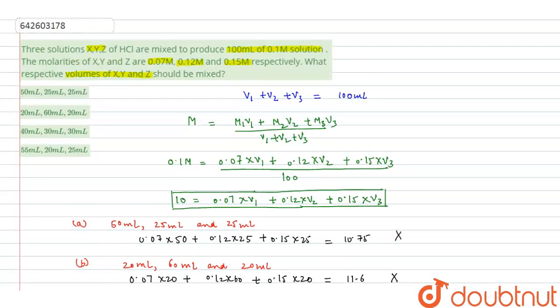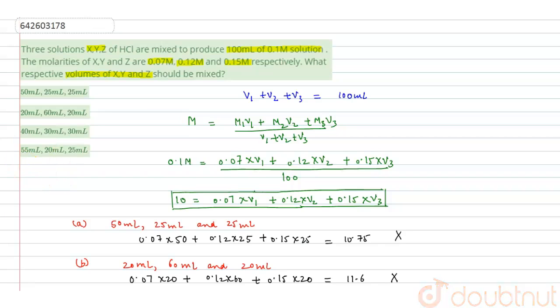These are the different volumes in which the solutions should be mixed to produce a final volume of 100 mL at 0.1 molar concentration. I hope you understood this solution. Thank you.